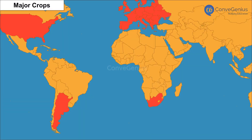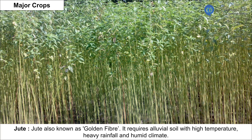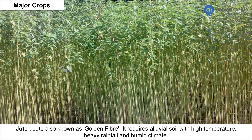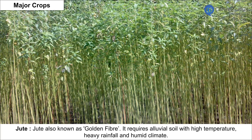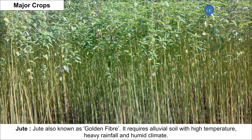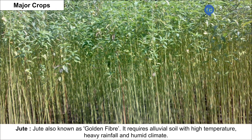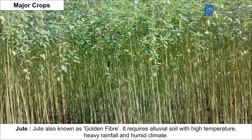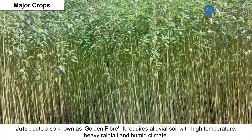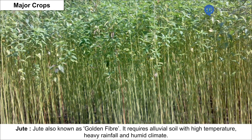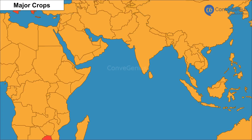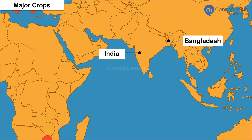Cotton requires ample sunshine and fairly dry conditions with 175 to 225 days without frost. It is majorly grown in USA, India and China. Jute, also known as golden fibre, requires alluvial soil with high temperature, heavy rainfall and humid climate. It is best grown in tropical areas of India and Bangladesh.